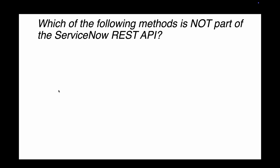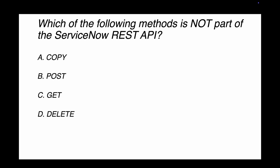Question 3: Which of the following methods is NOT part of the ServiceNow REST API? Pay close attention to the word 'NOT' — many people miss this in the exam. The options are copy, post, get, and delete. Post creates a new record, get retrieves a record, and delete removes one — but there is no concept of 'copy' in ServiceNow REST API. So the right answer is copy.